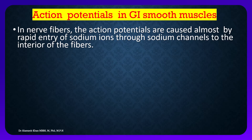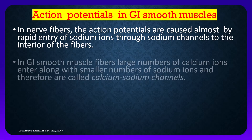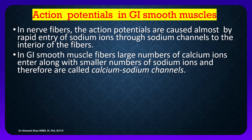In nerve fibers, action potentials are caused almost entirely by rapid entry of sodium ions through sodium channels to the interior of the fiber. In GI smooth muscle fibers, large numbers of calcium ions enter along with small numbers of sodium ions.